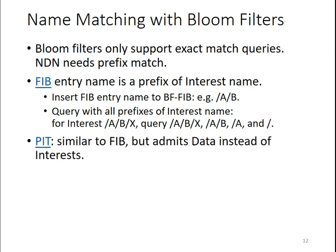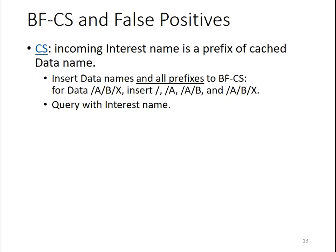The pending interest table uses the same prefix match algorithm as FIB, but it admits data instead of interest, so it needs a separate bloom filter. For the content store, the match is reversed — the incoming interest name is the prefix of the cached data name. To support this, we put all data names and all their prefixes into the bloom filter. For data ABX, we put slash, A, AB, and ABX into the bloom filter. When an interest comes in, it's an exact match query using just the interest name.